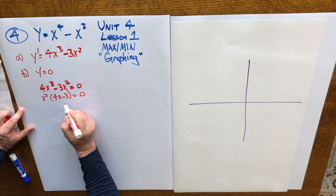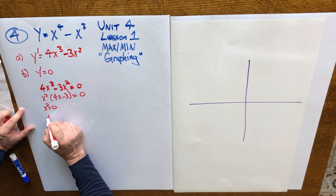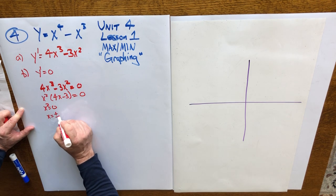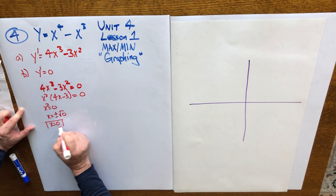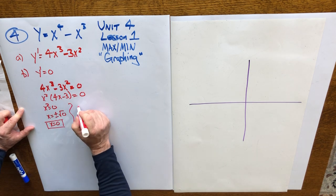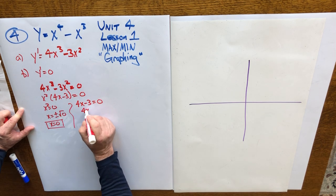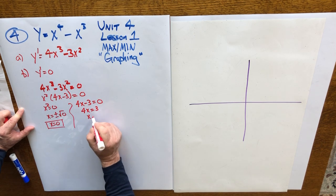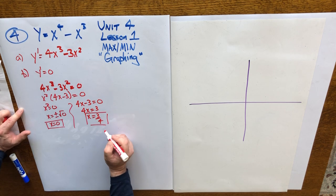Two factors multiplied together to give you 0. So either x squared equals 0, x equals plus or minus the square root of 0, so x just equals 0. That's one critical number, one potential maximum or minimum. Or you have 4x minus 3 equals 0, 4x equals 3, x equals 3 quarters. So there are your two critical numbers.